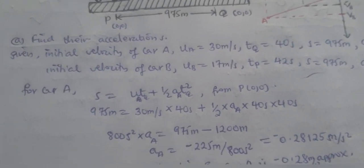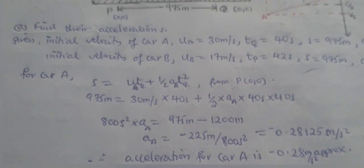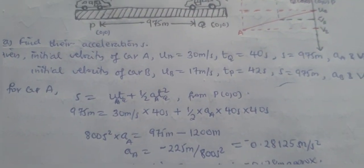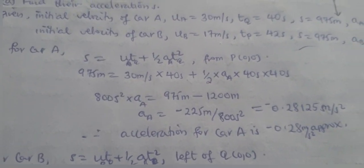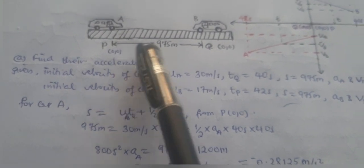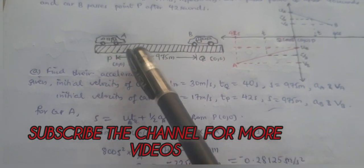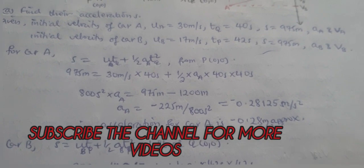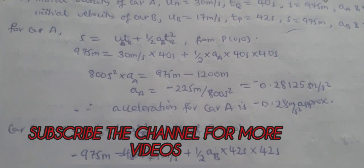We use the second equation for linear motion — the displacement equation. The frame of reference for car A is from point P, which is 0.0 as the initial axis coordinate. The displacement is to the right, so it is positive, and the initial velocity is also positive as it is toward the positive x-axis. The acceleration for car A equals approximately negative 0.280 m/s².